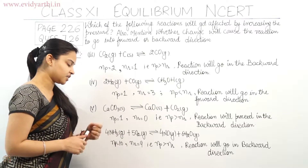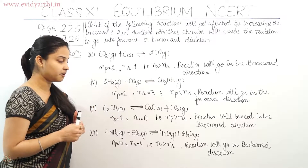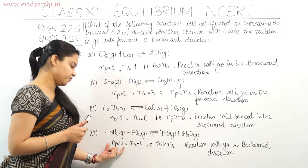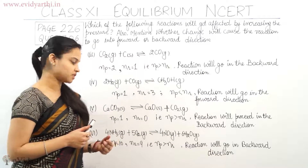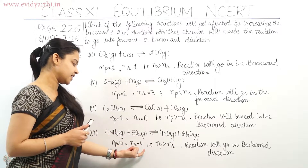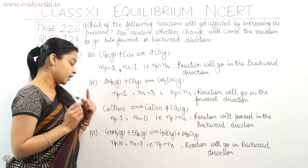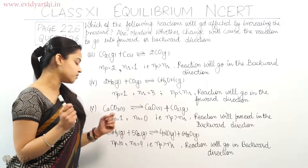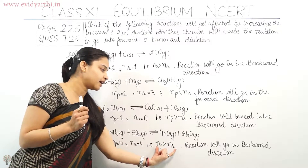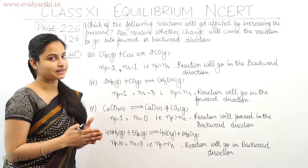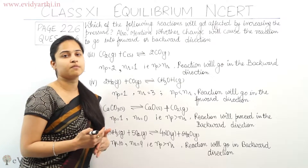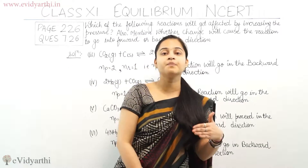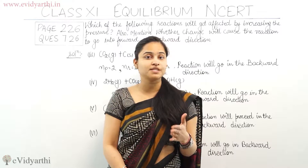The sixth reaction: 4NH₃(g) + 5O₂(g) in equilibrium with 4NO(g) + 6H₂O(g). The number of moles in the product case is 4 + 6 = 10, and the number of moles in the reactant case is 4 + 5 = 9. Np is greater than Nr. According to Le Chatelier's principle, if pressure is increased, equilibrium shifts to the side with fewer moles — so this reaction also moves in the backward direction.